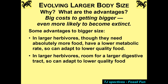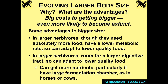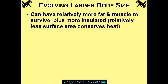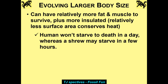It takes more time to digest lower-quality food. Perissodactyls and artiodactyls have relatively more fat and muscle to survive. Plus, you're more insulated — you have relatively less surface area if you're larger, and that conserves heat, so you lose heat less. If you're 200 pounds and it's cold outside, you might be fine. If you're 90 pounds and it's cold outside, you might start shivering. A human won't starve to death in a day, but a shrew may starve to death in a few hours — the metabolic rates and heat loss in a shrew are phenomenally high.